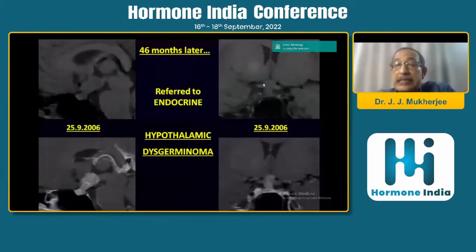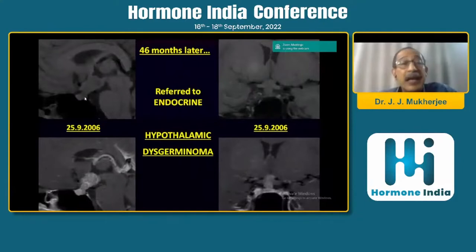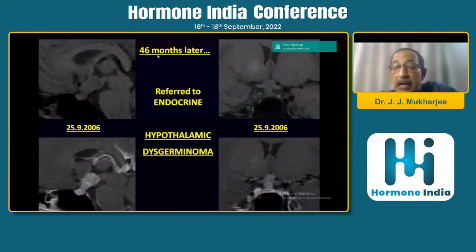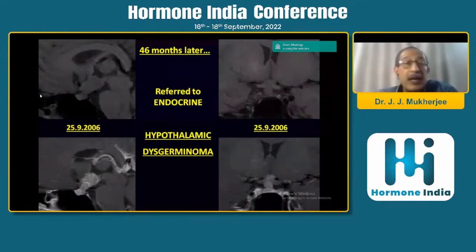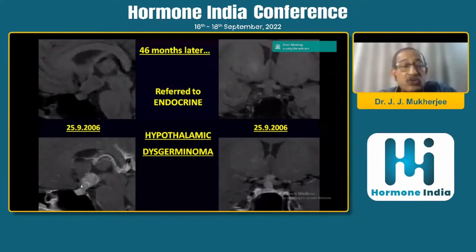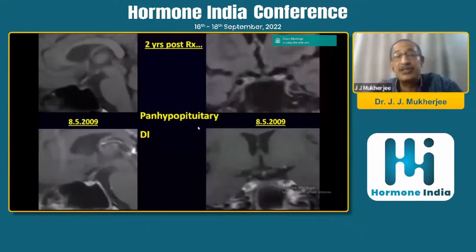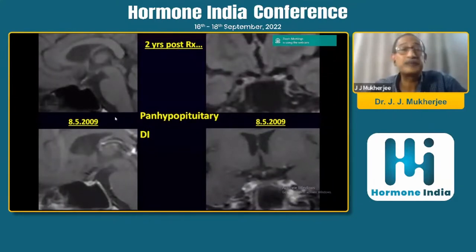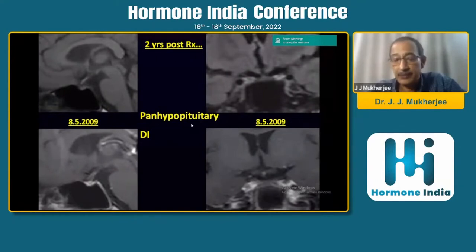Take this young lady who was followed up for four years in the gynaecology unit because she had presented with amenorrhea, galactorrhea, and prolactin five times elevated. They thought this was a pituitary adenoma — a prolactinoma — and treated her with bromocriptine, later cabergoline. Her periods returned and galactorrhea disappeared. But unfortunately this lesion kept increasing. Looking at the stalk — which should not be more than 4 mm — you can see the huge thick stalk going up into the hypothalamic region. This was a dysgerminoma. You need to do beta-HCG either in blood or CSF. Treatment is radiotherapy, and you can see the lesion shrinks after radiotherapy, though the patient becomes pan-hypopituitary.